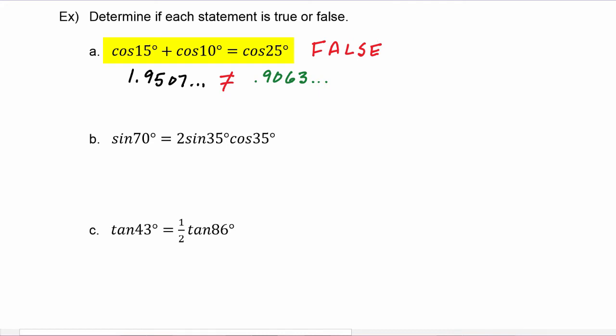Something really important to notice here is that you can't just add up the arguments — cosine of 15 plus cosine of 10 is never going to equal cosine of 25, and that's true for all the trig functions.